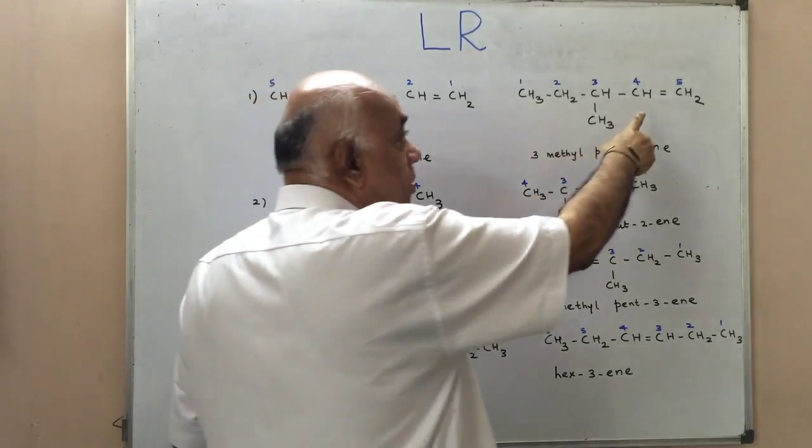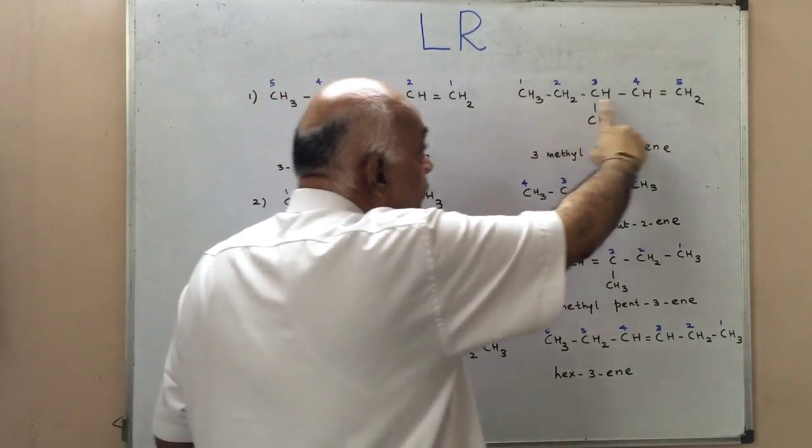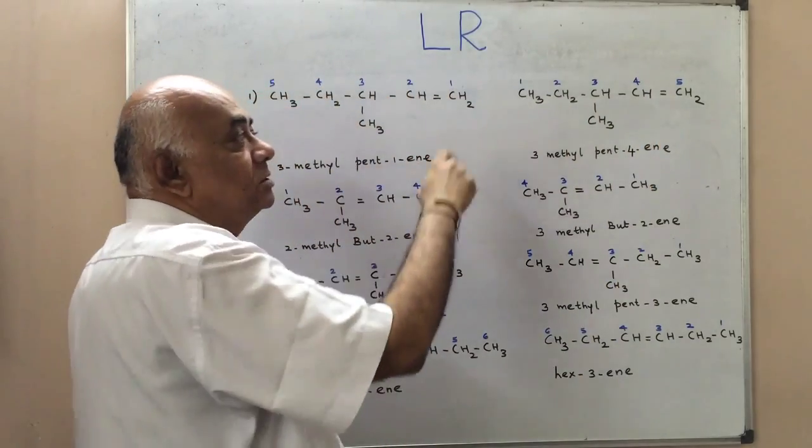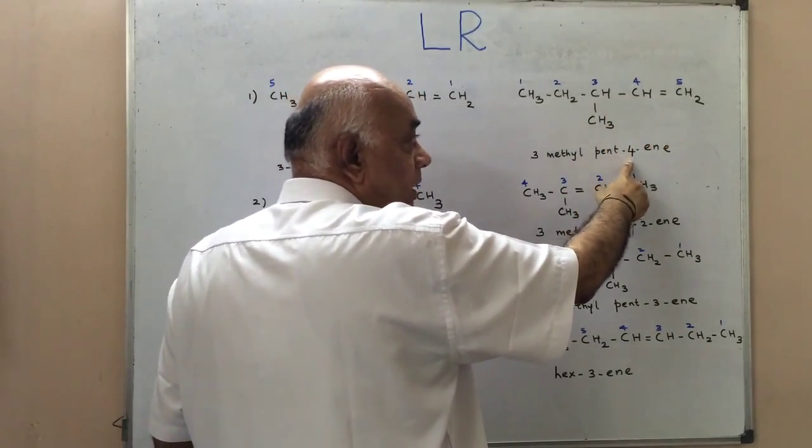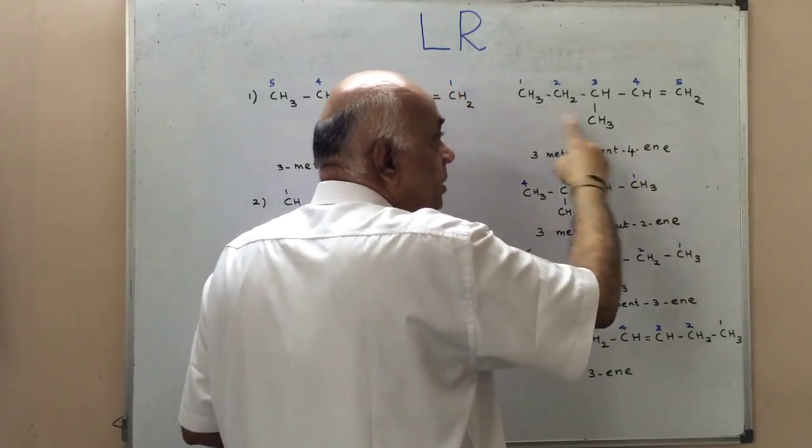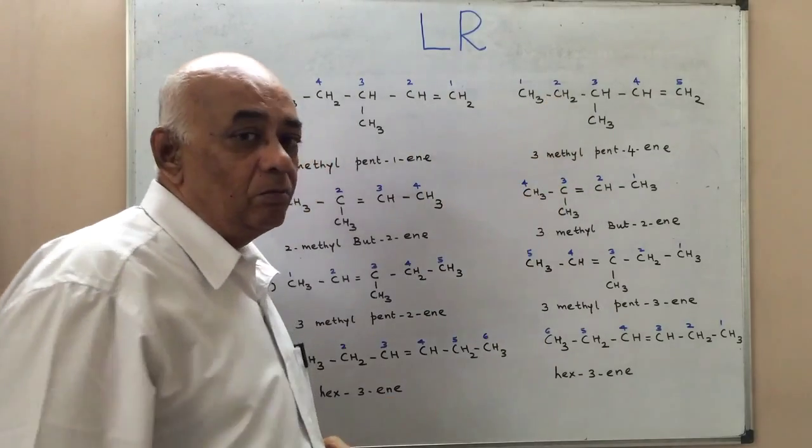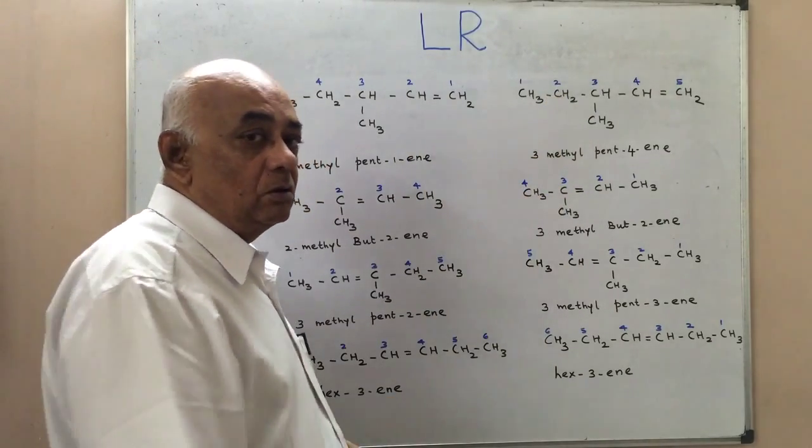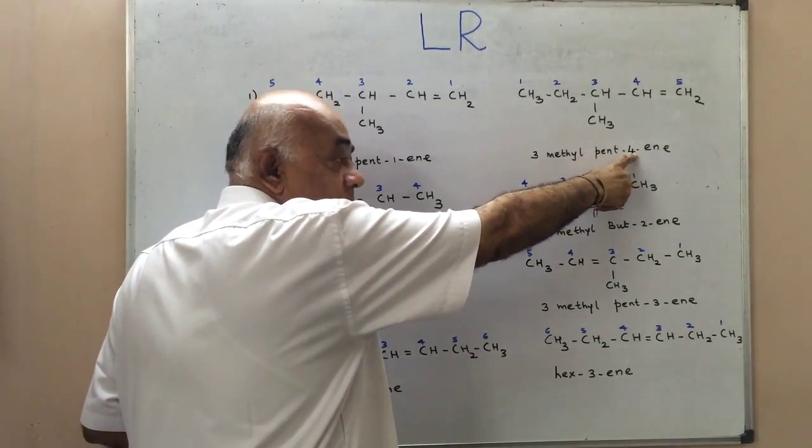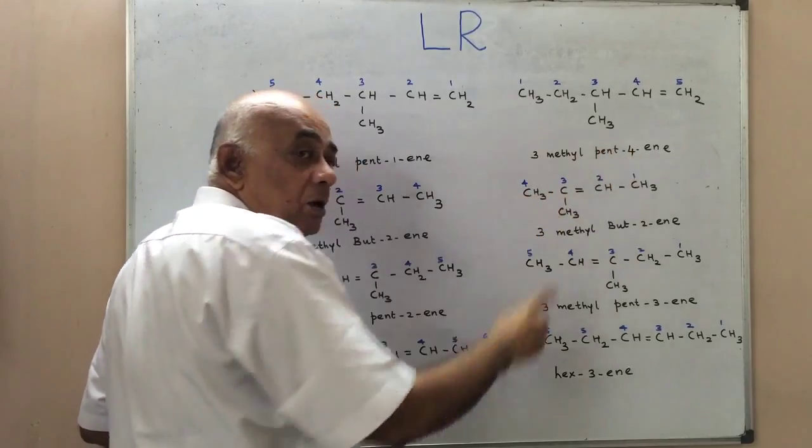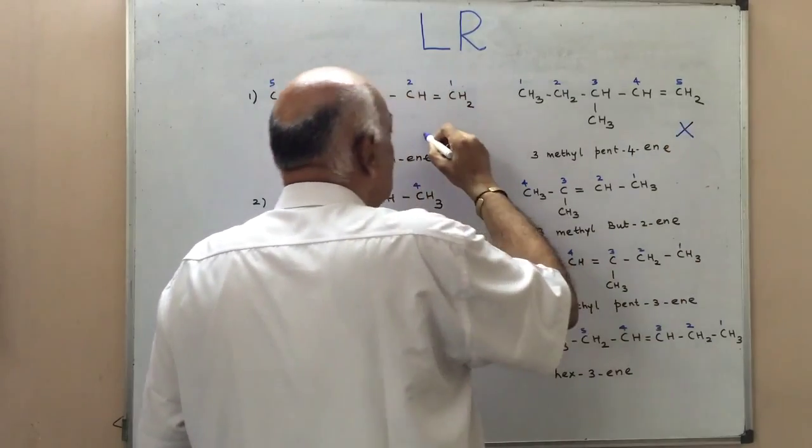Alternatively, we could number it the way I have shown here, numbering the carbon atoms from left to right. If we do this, then carbon atom 4 is the one which carries the double bond, and therefore it becomes pent-4-ene. The position of the methyl group remains the same: 3-methyl-pent-4-ene. However, this is the wrong name because the alkene has a higher number, which is against the lowest number rule. Therefore, this is wrong and the first would be right.